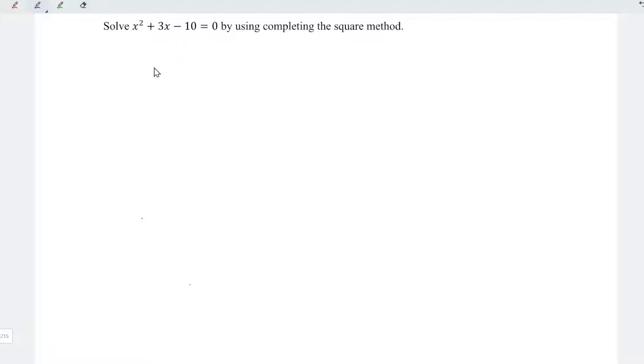Let's rewrite the equation. We have x squared plus 3x. For constants, always move to the right. So it's equal to, minus moves forward to plus, and we have 10.